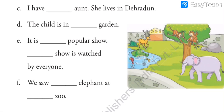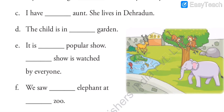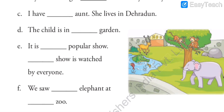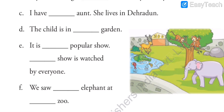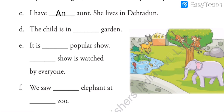Blank C: 'I have blank aunt. She lives in Dehradun.' Have you been to Dehradun? You should visit — it is a beautiful place with beautiful nature. Now, after the blank the word is 'aunt,' which starts with the vowel A. Also, no specific detail is given about the aunt — just that someone has an aunt. Since no details are given and the word starts with a vowel, we put 'AN.' The answer is 'AN aunt.'